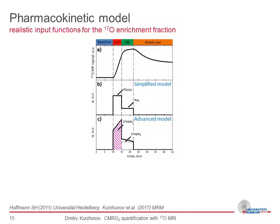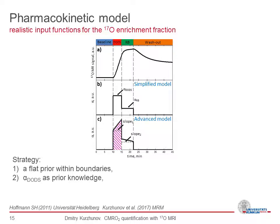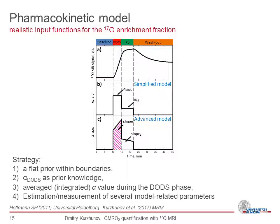We called this the advanced model, and we wanted to determine how much prior knowledge about the other parameters is needed to reliably quantify CMO2. First, we tested providing no information about the oxygen enrichment fraction. If that is not sufficient, we use one parameter — the enrichment fraction of the fresh 17-O pulse, i.e., the amplitude. If still insufficient, the average integrated value would be used. If that is also not sufficient, then several alpha-related parameters such as slope 1 and slope 2 would need to be measured and included as prior knowledge in the model.